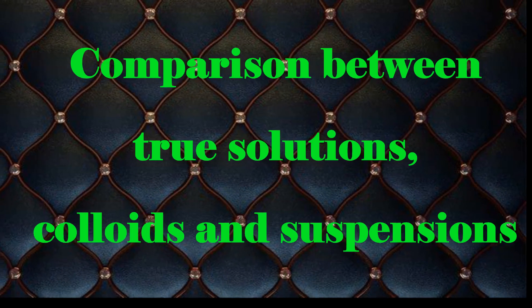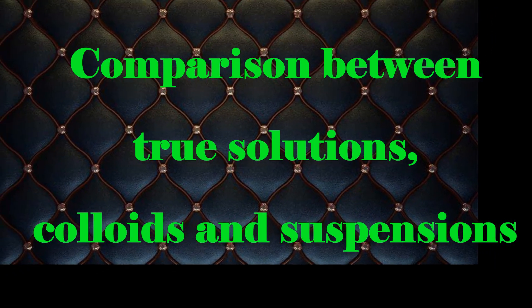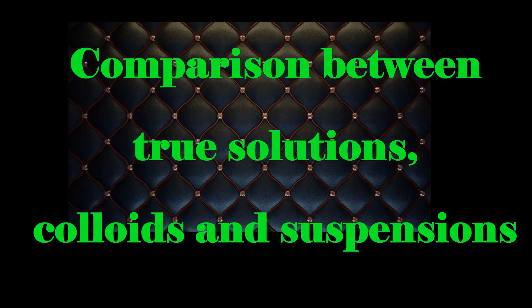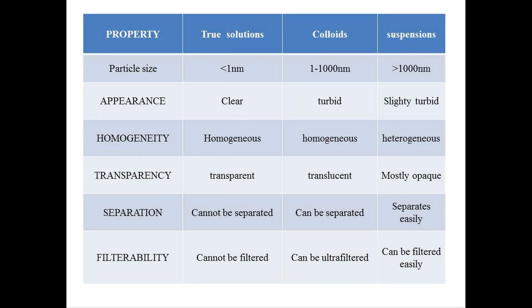Now, a comparison between true solutions, colloids, and suspensions. Colloids have a particle range between 1 to 1000 nanometers. Their appearance is turbid and they are homogeneous in nature. They occur as translucent materials, and these substances can be separated easily by ultrafiltration.